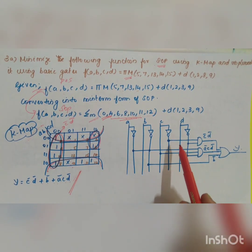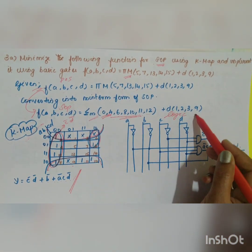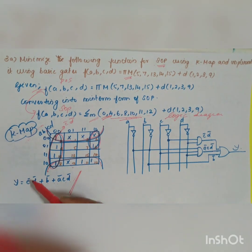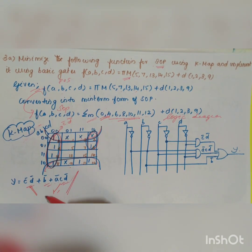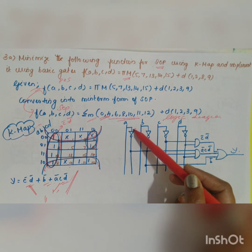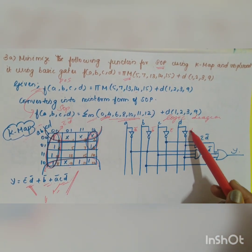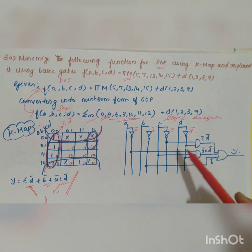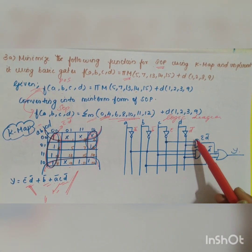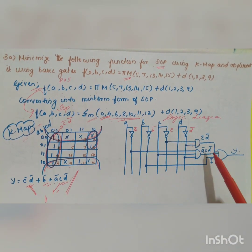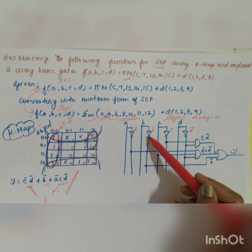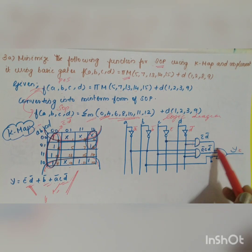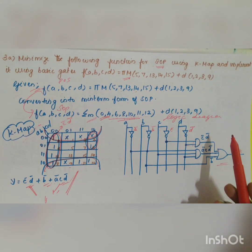For the logic diagram using basic gates, since we have a sum of product expression with three terms, we use NOT gates to generate complements ā, b̄, c̄, d̄. The first term c̄d̄ is connected to an AND gate. The term ācd̄ is connected to another AND gate. The term b̄ is taken directly. These three outputs are connected to an OR gate to get the final output.